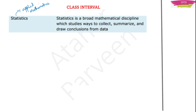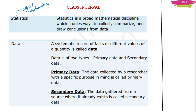Now we are talking about data in statistics. But what is this data? It is just a systematic record of facts or a record of different values of a certain quantity. Data means some information given to you — it may be a group of numbers, it may be a group of players, it could be anything. Now this data could be of two types.